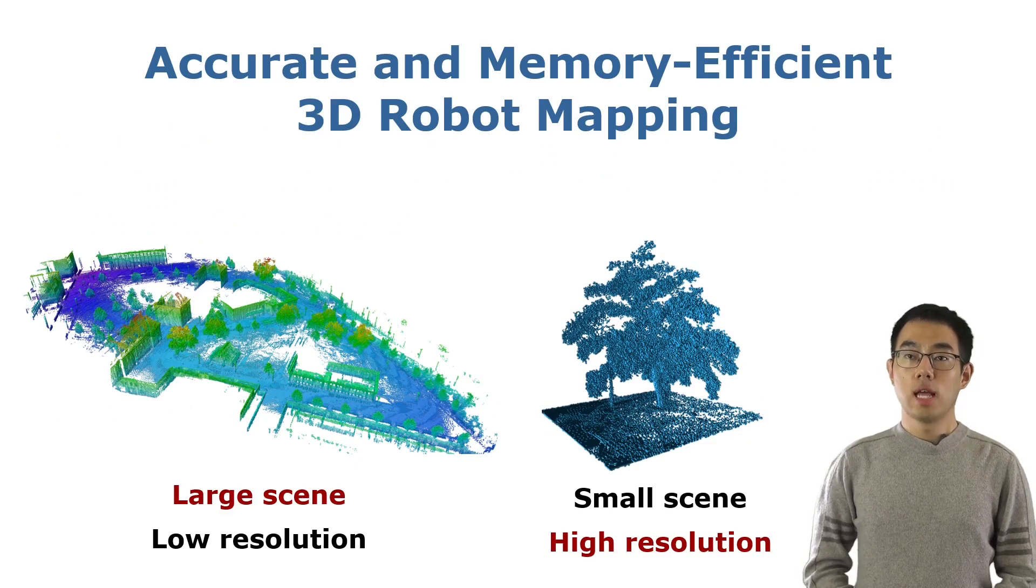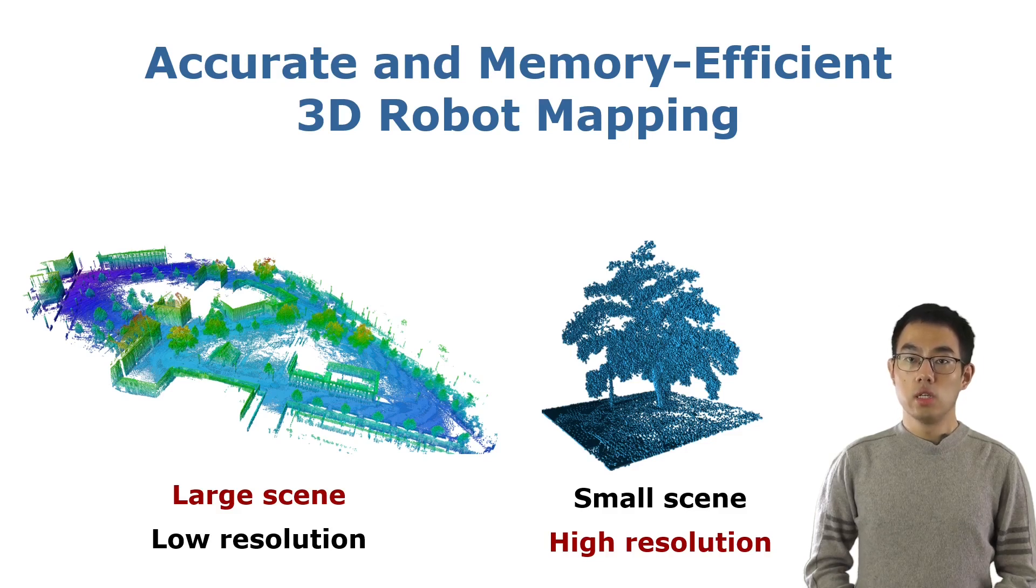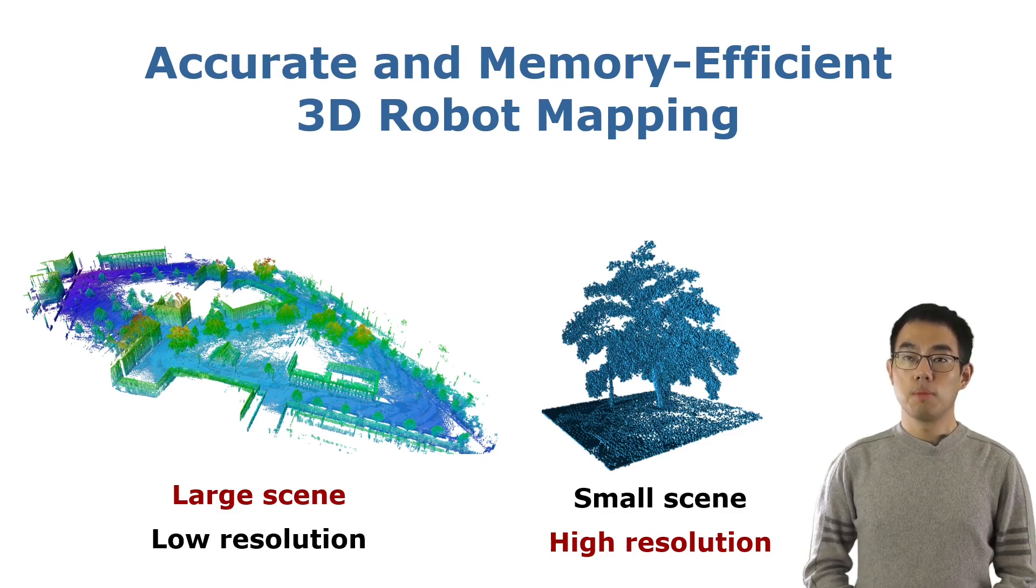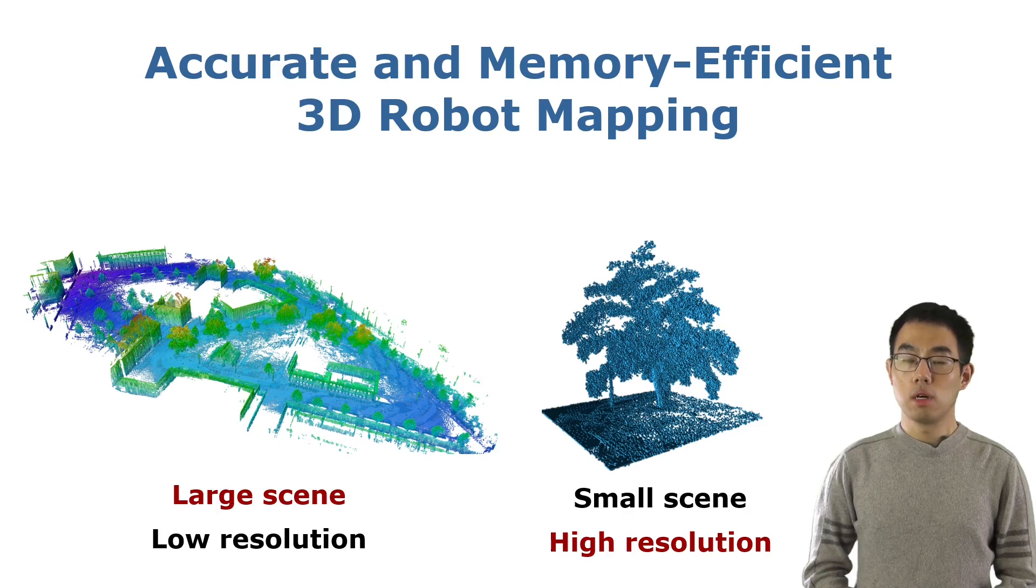Accurate mapping of large-scale 3D environments is an essential building block of most outdoor autonomous systems. Traditional methods like voxel-based mapping need to balance mapping accuracy and memory consumption. Usually, we have to choose large-scale mapping with low-resolution or high-resolution mapping for small scenes.